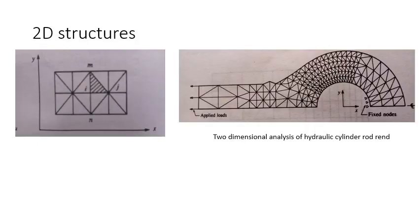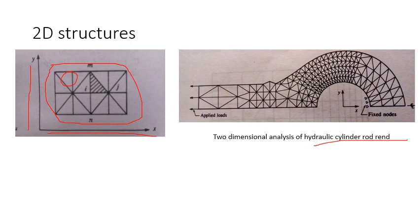Some examples of 2D structures: the first one is a rectangular plate that is discretized into small triangular elements each of the same size, with x and y directions present. In a more complicated case, a hydraulic cylinder rod is shown, discretized into triangular elements of different shapes — in some places the triangular elements are bigger, and in other places they are finer in nature.